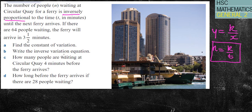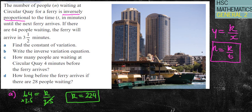I need to find the constant of variation. Part A says find the constant of variation. I've got 64 people when the time is 3.5 minutes. So 64 equals k over 3.5. To find k, I'll times by 3.5: 64 times 3.5 equals 224. So k equals 224.